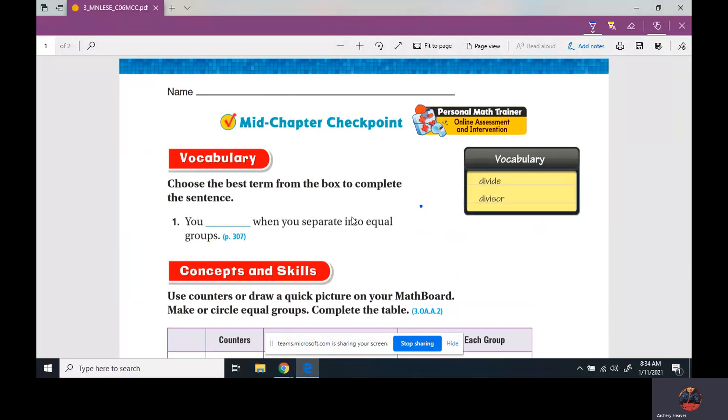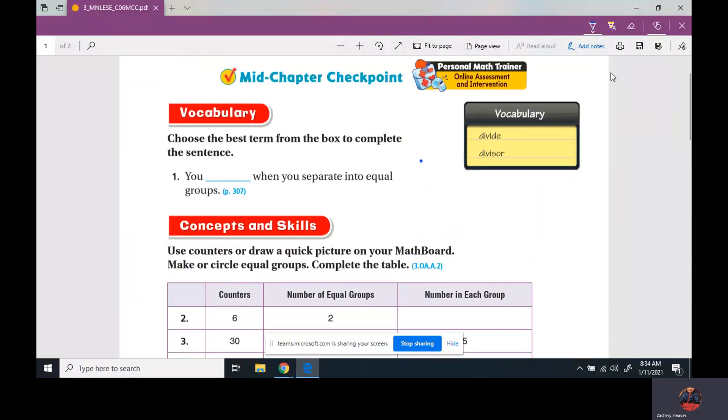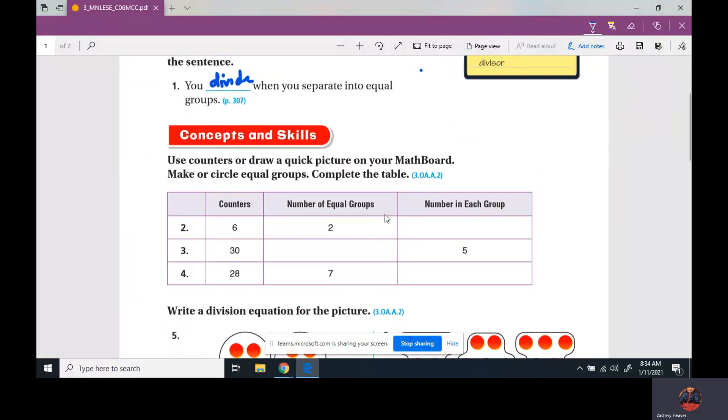So number one, it says you blank when you separate into equal groups. Is it divide or divisor? So we divide. We separate it into equal groups, we divide. Remember, if you don't get one right or you have to struggle with one, circle it. Say okay, I've got to relearn that or look at that again.